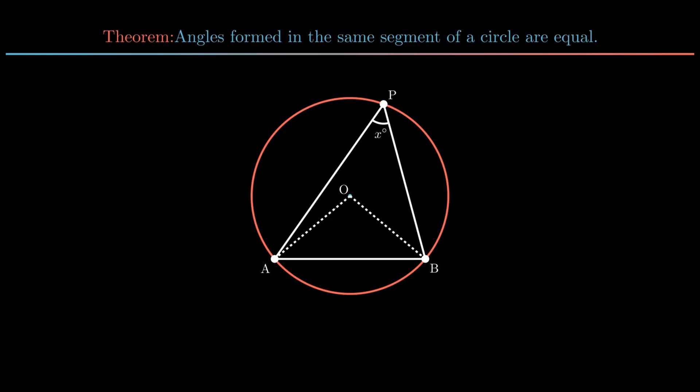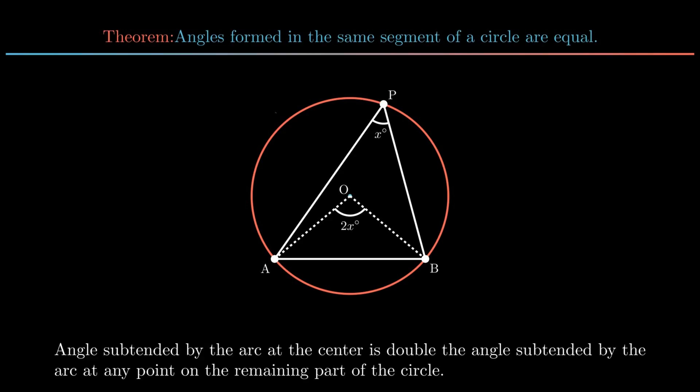This results in the formation of angle AOB equal to 2x, as angle subtended by the arc at the center is double the angle subtended by the same arc at any point on the remaining part of the circle.